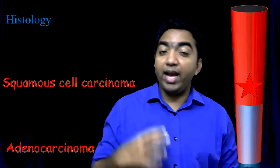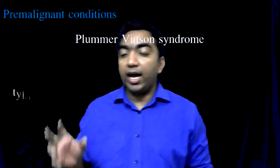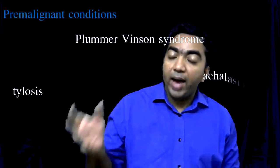Coming to the pre-malignancies of the esophagus: when a patient presents with dysphagia, we need to assess whether conditions like an esophageal web, Barrett's esophagus, or achalasia cardia carry a chance for malignancy. The pre-malignancies of the esophagus include Plummer-Vinson syndrome, Tylosis, achalasia cardia, and Barrett's esophagus.